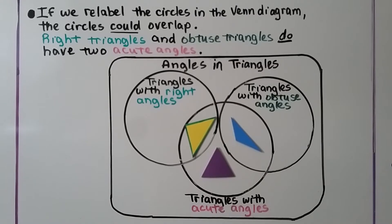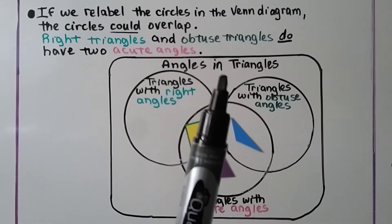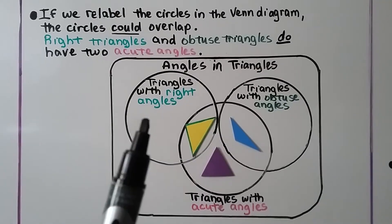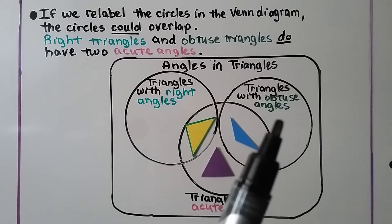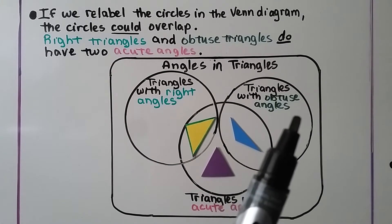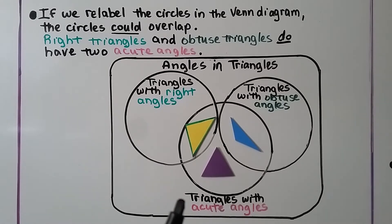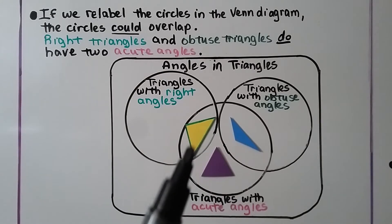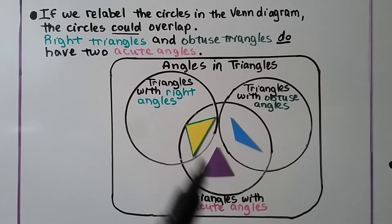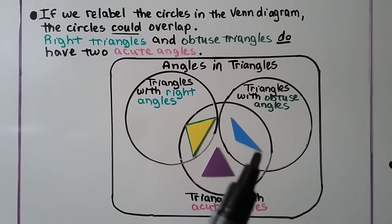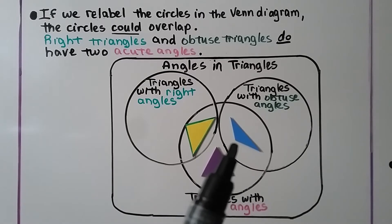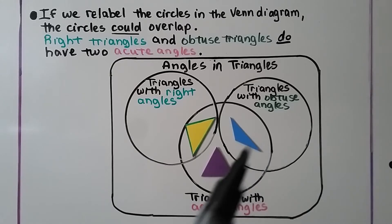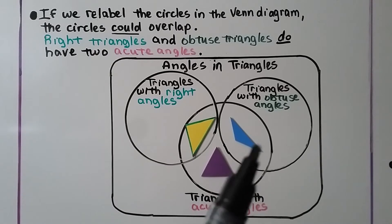If we relabel the circles in the Venn diagram, the circles could overlap. Instead of types of triangles, if we use the angles that are in triangles — a circle for triangles with right angles, a circle for triangles with obtuse angles, and a circle for triangles with acute angles — they overlap. Because a right triangle has two acute angles, it shares those circles. An obtuse triangle also has two acute angles, so it shares the circle with the acute circle.